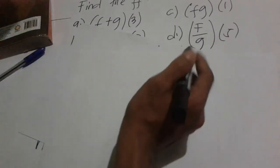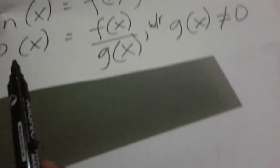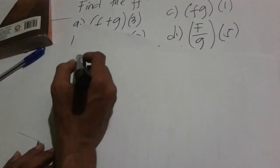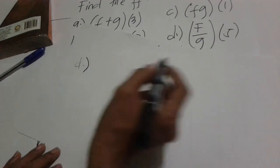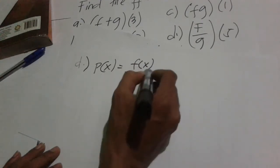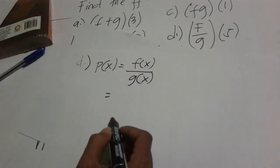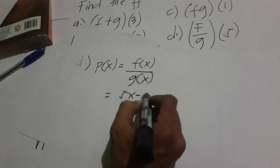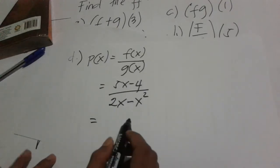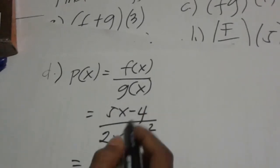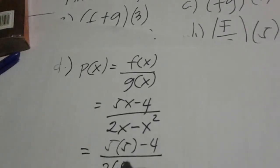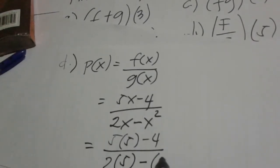For letter (d), we have (f/g)(5), where x = 5. We use v(x) = f(x)/g(x), where g(x) ≠ 0. Substituting: (5x - 4)/(2x - x²). Plugging in x = 5: (5·5 - 4)/(2·5 - 5²) = (25 - 4)/(10 - 25).